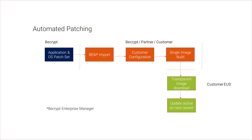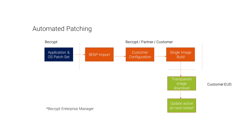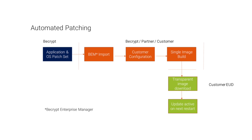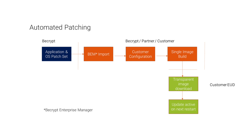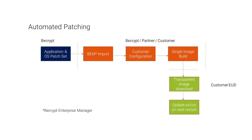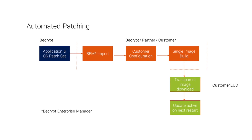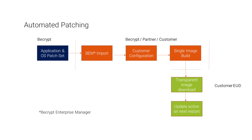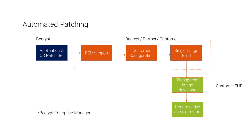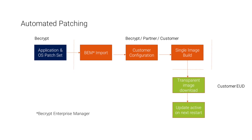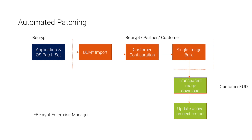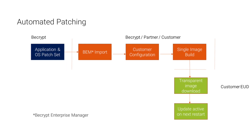Bcrypt creates an application and operating system patch set that's imported into Bcrypt Enterprise Manager, the management platform. We can either host this service for our customers or they can do it themselves. The management platform creates a single image — all operating system and application components in one image — which is then downloaded transparently to user devices. The users don't know it's happening; in the background, a separate operating system image gets updated and marked as active on the next restart. You don't need to worry about any complexity — the management platform looks after all of that for you.